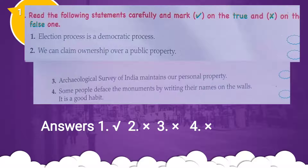Next: read the following statements carefully and mark tick for true and wrong for false. Number one: election process is a democratic process — this is true. Number two: we can claim ownership over a public property — this is false; we cannot claim ownership over public property. Number three: Archaeological Survey of India maintains our personal property — this is false; it maintains public property like heritage and monuments.